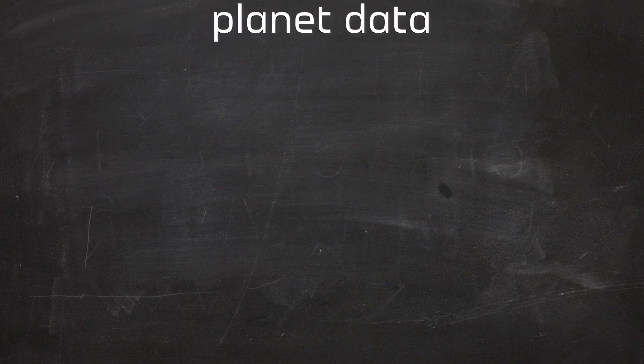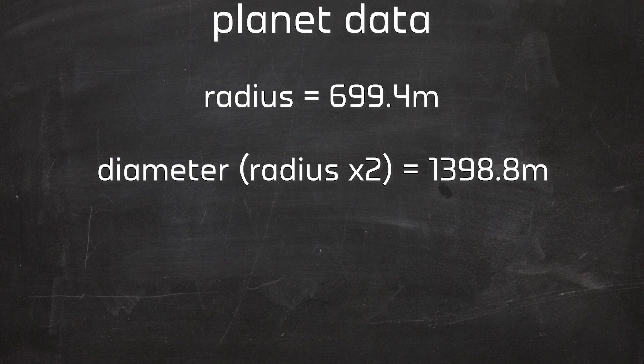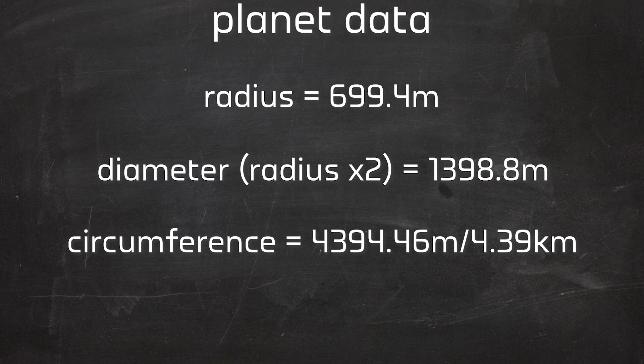We know EVERYTHING about these planets now. The radius is 699.4 meters. The diameter is 1,398.8 meters. The circumference is 4,393.46 meters, or 4.39 kilometers. And the surface area is 6,147 kilometers squared.